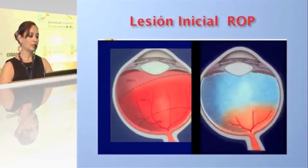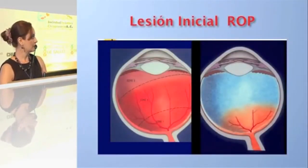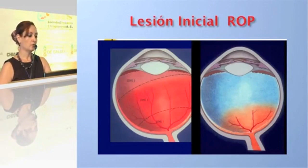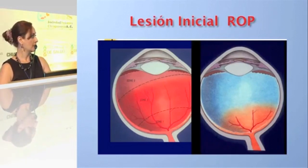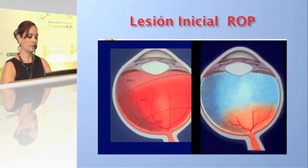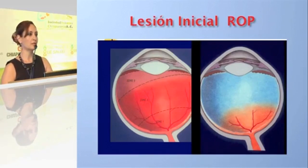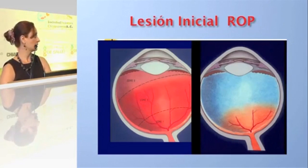The initial ROP lesion is shown here with its different zones: the posterior pole is zone 1, then zone 2 and zone 3. In a premature retina we can observe that vascularization begins and, upon premature birth, exposure to the environment with high oxygen concentrations predisposes the infant to increased vascular proliferation.